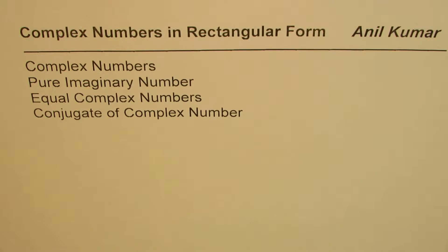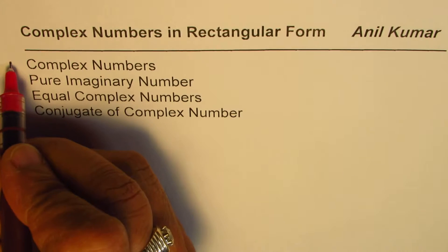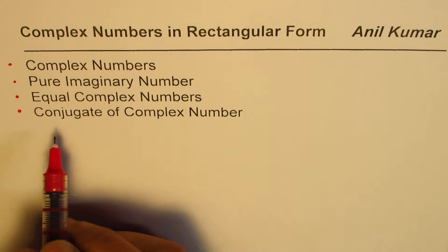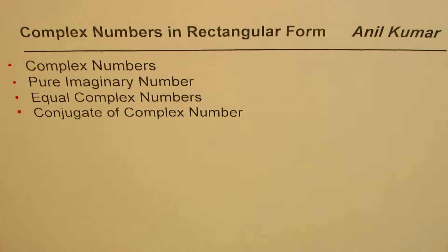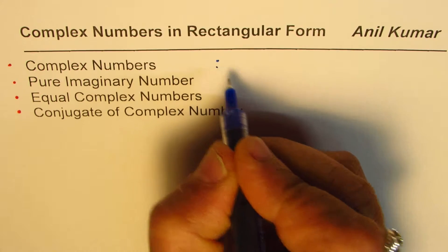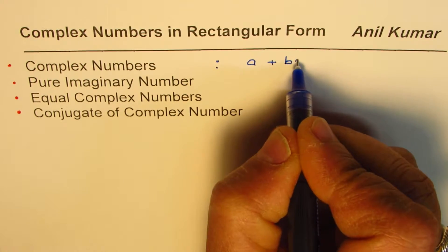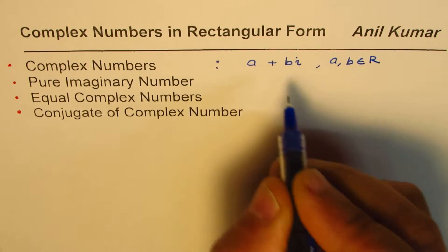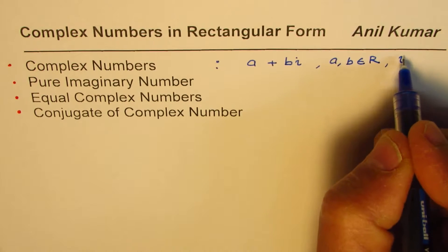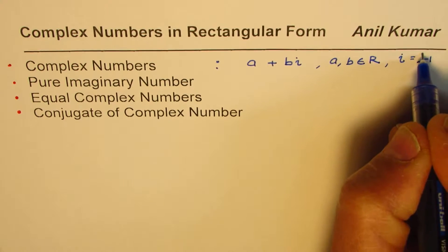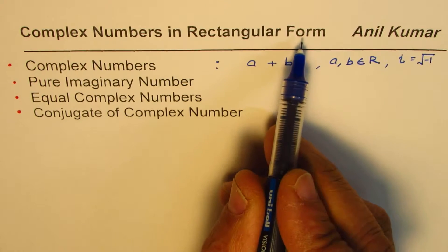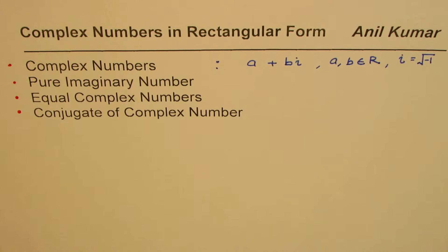I'm Anil Kumar and here is a brief introduction to complex numbers in rectangular form. We'll understand what complex numbers are, what a pure imaginary number is, when two complex numbers are equal, and what we understand by the conjugate of a complex number. Complex numbers in general are written in the form a plus bi, where both a and b are real numbers and i is equal to the square root of minus one. In this form, it is called the rectangular form.